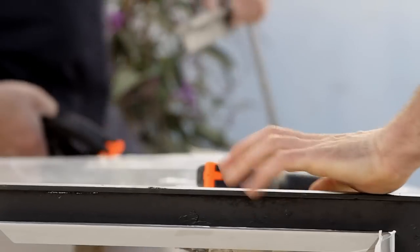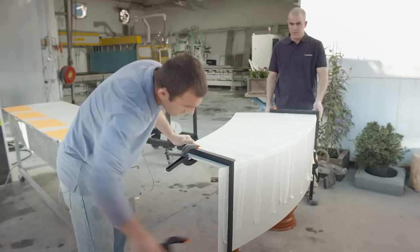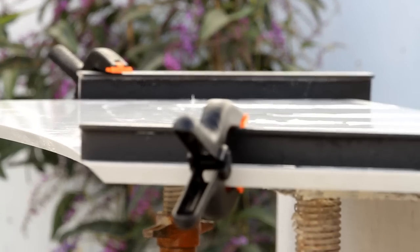Clamp the thermoformed Caesarstone to the edge of the coffee table at an exact 90 degree angle to ensure that it's perfectly aligned. Remove the tape. The piece should now retain its thermoformed shape.